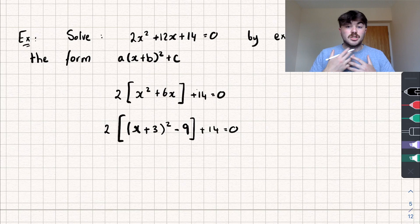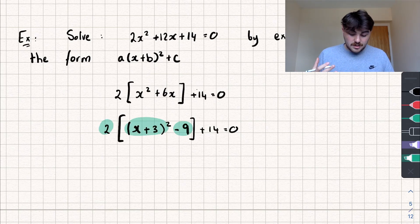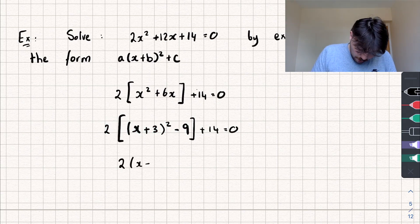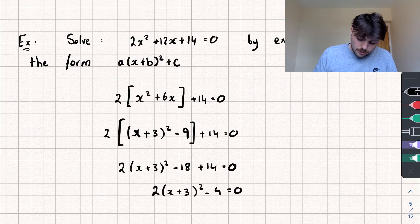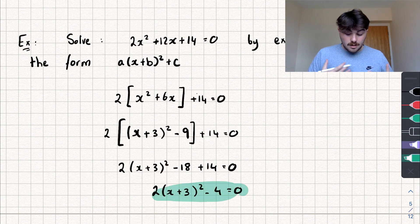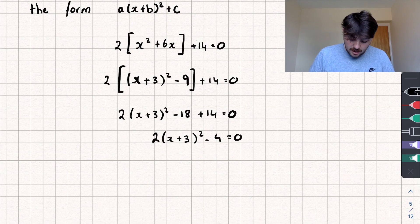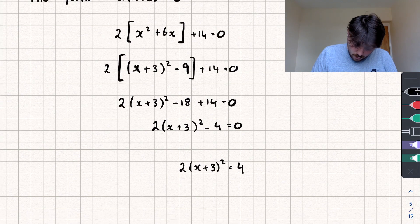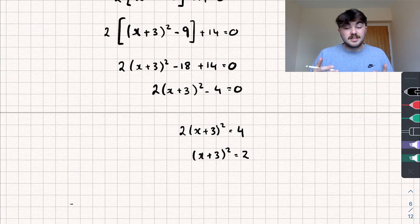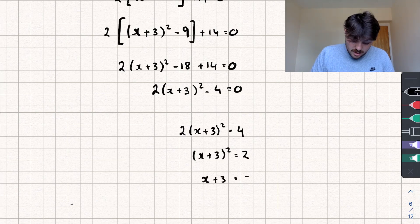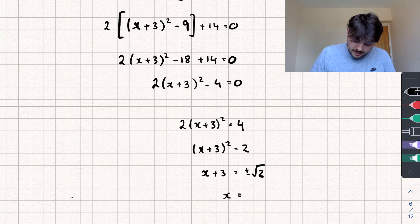To finish up, we expand the square brackets by multiplying 2 by both terms inside, giving 2 lots of x plus 3, all squared, minus 18, plus 14 equals 0. Simplifying: 2 lots of x plus 3, all squared, minus 4 equals 0. Now we solve it: add 4 to both sides to get 2 lots of x plus 3, all squared, equals 4. Divide both sides by 2 to get x plus 3, all squared, equals 2. Square root both sides: x plus 3 equals plus or minus root 2. Subtract 3: x equals negative 3 plus or minus root 2.